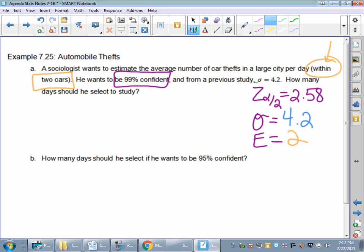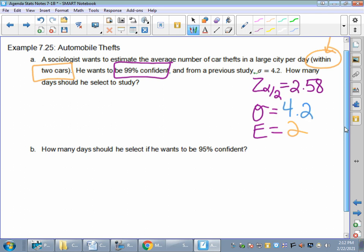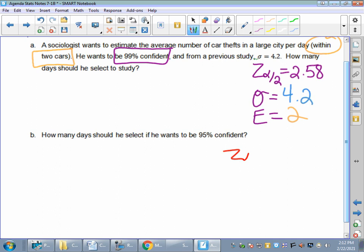Well, letter B is really the difference that, or the situation that I want to talk about. How many days should he select? So what's my N if he wants to be 95% confident? So my Z is going to change, right? My sigma is still 4.2. My margin of error is still two, but now my Z changes. I use a different Z value in here. So if I'm talking about 95% confident, my alpha is equal to 5% confident, or 0.05.